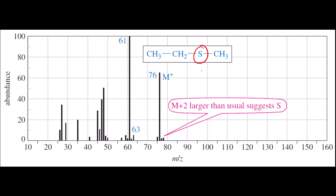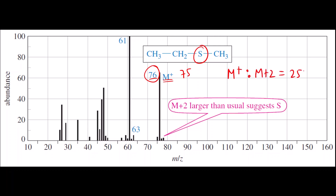For sulfur, if the M+ ion peak is at, say, 75 relative abundance, and the ratio of M+ to M+2 is 25 to 1, then the M+2 peak will be at approximately 3 (since 75 divided by 25 is 3). The M+ peak is 25 times higher than the M+2 peak, so the heteroatom is sulfur.